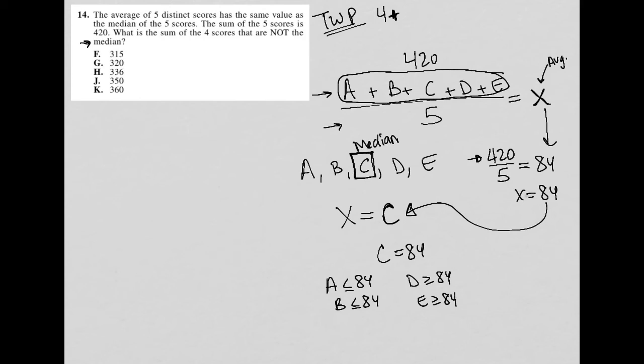Let's see what else it says. What is the sum of the four scores that are not the median? The sum of the four scores that are not the median - well, the median is 84. I am looking for the sum of the four scores that are not the median, which means I'm looking for a + b + d + e.